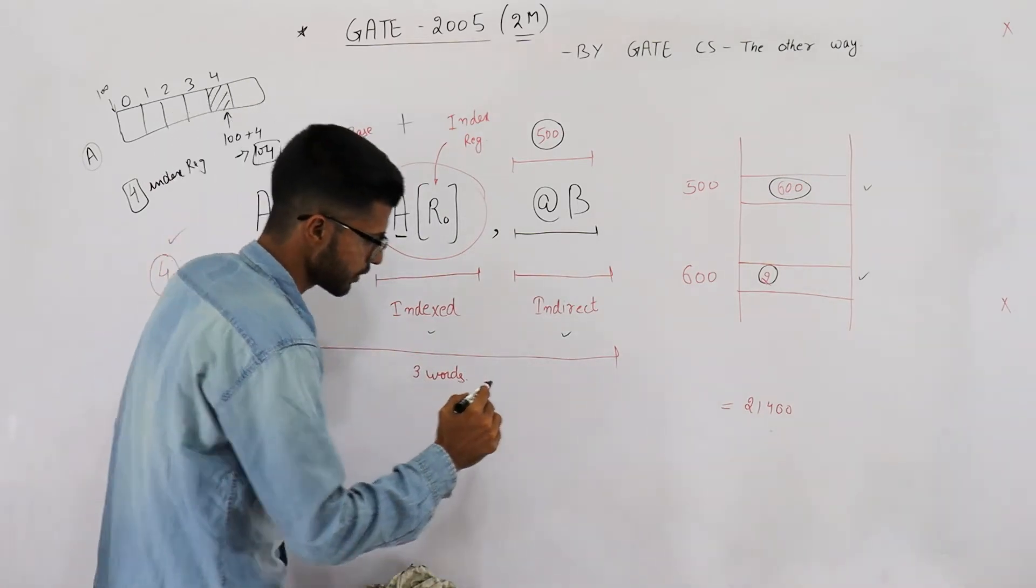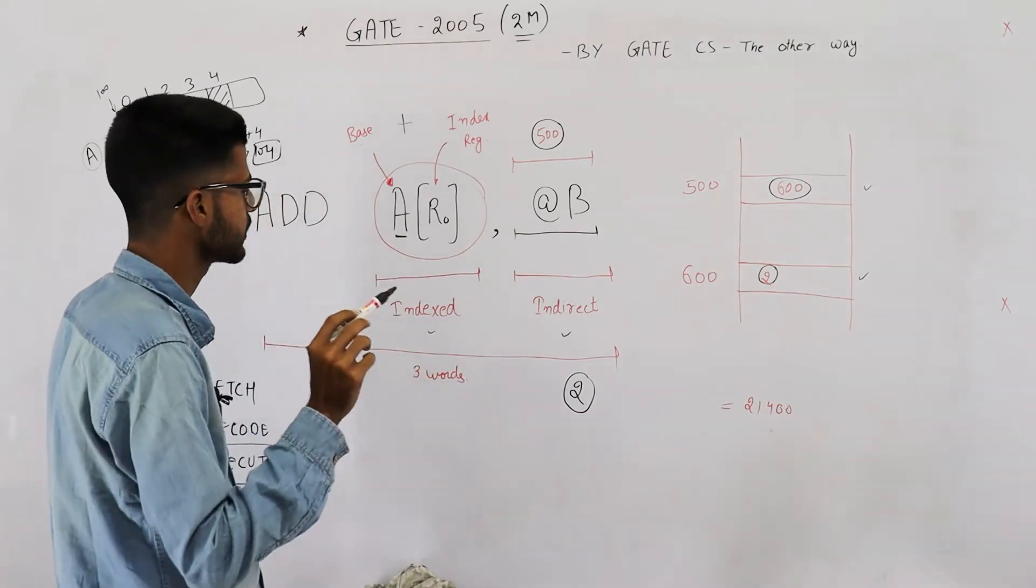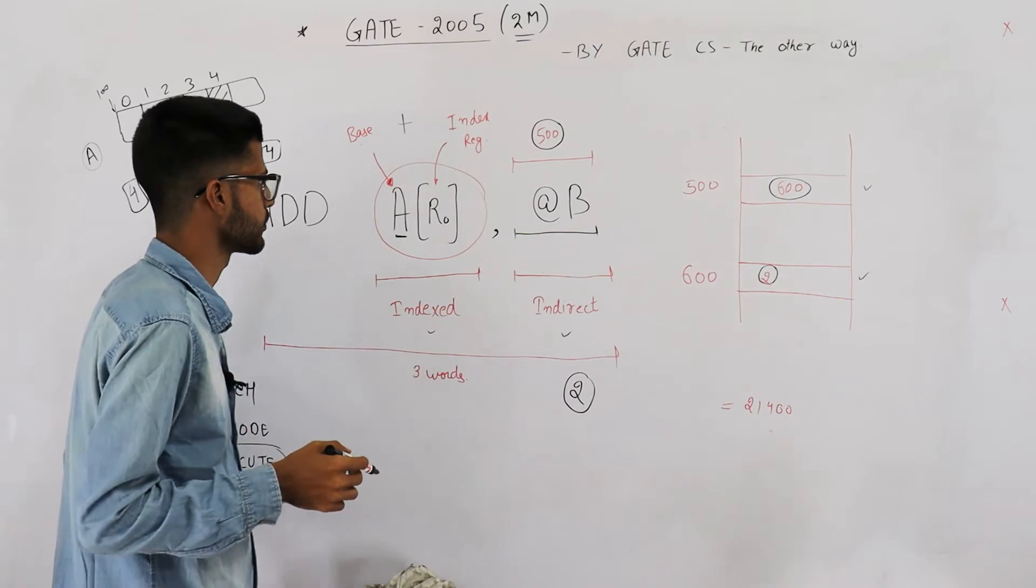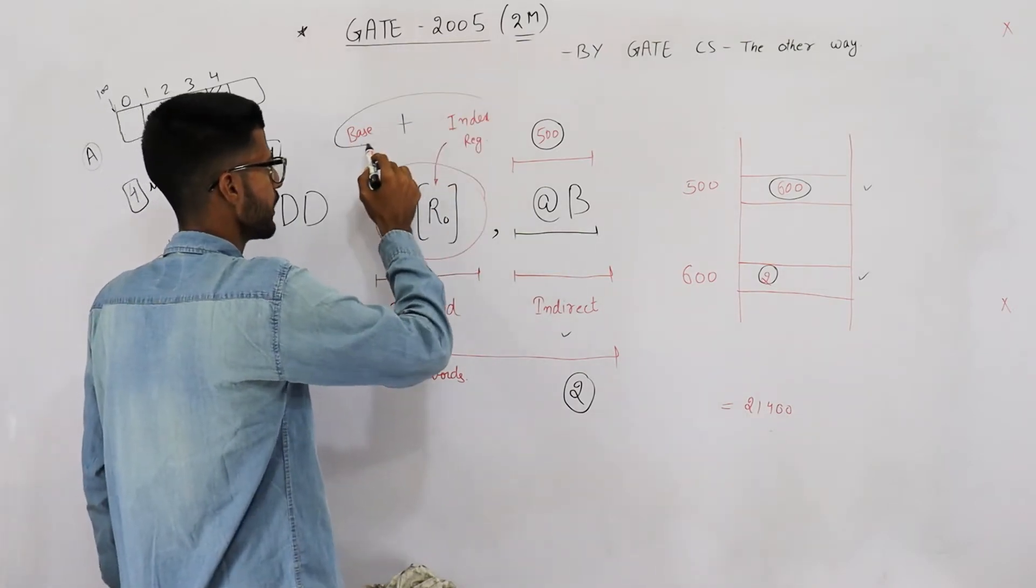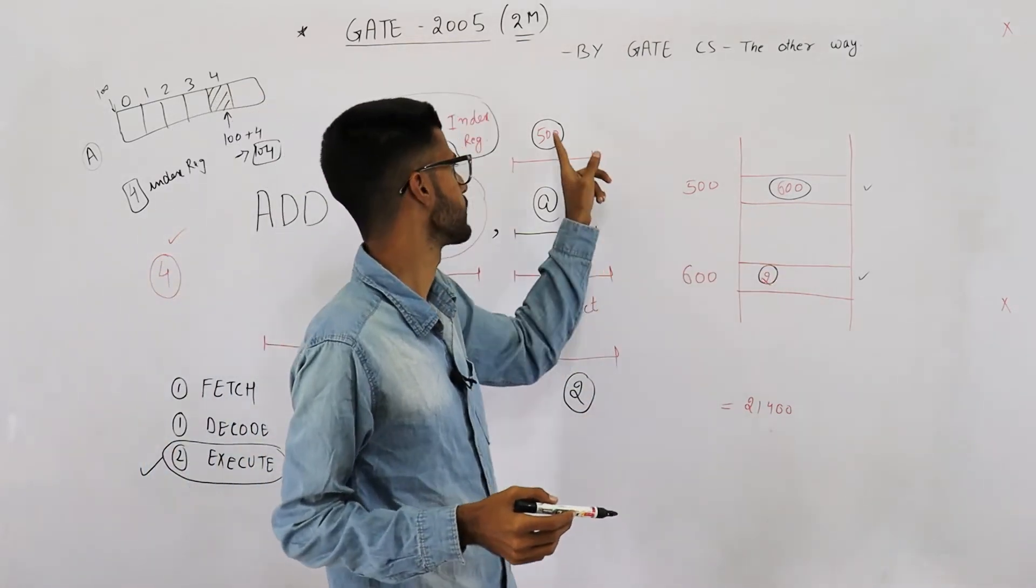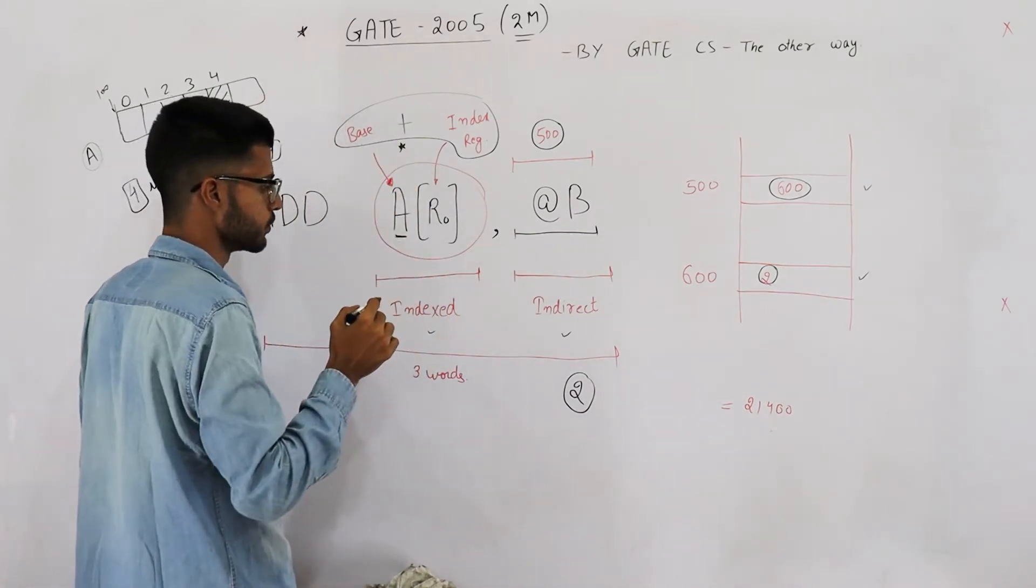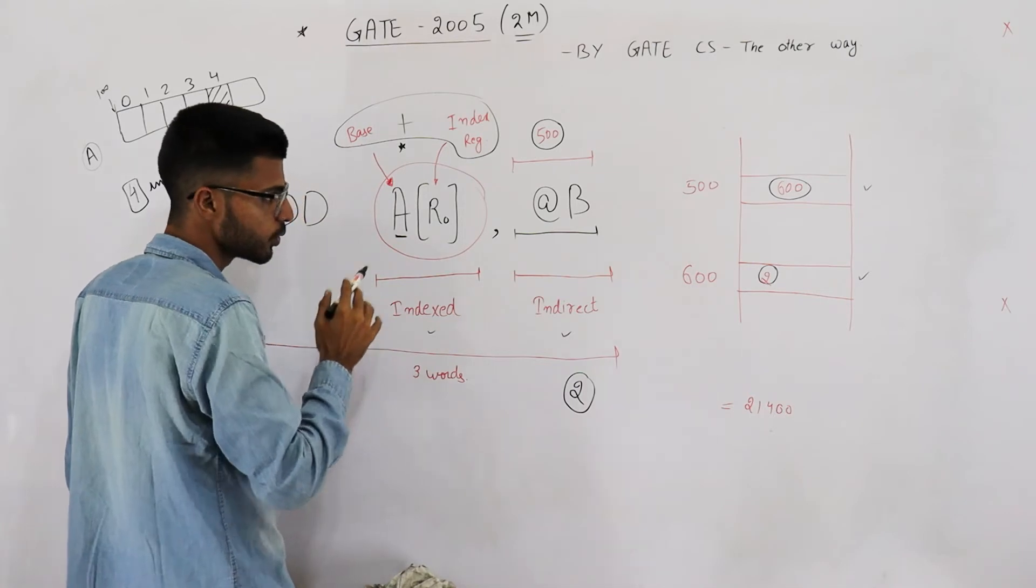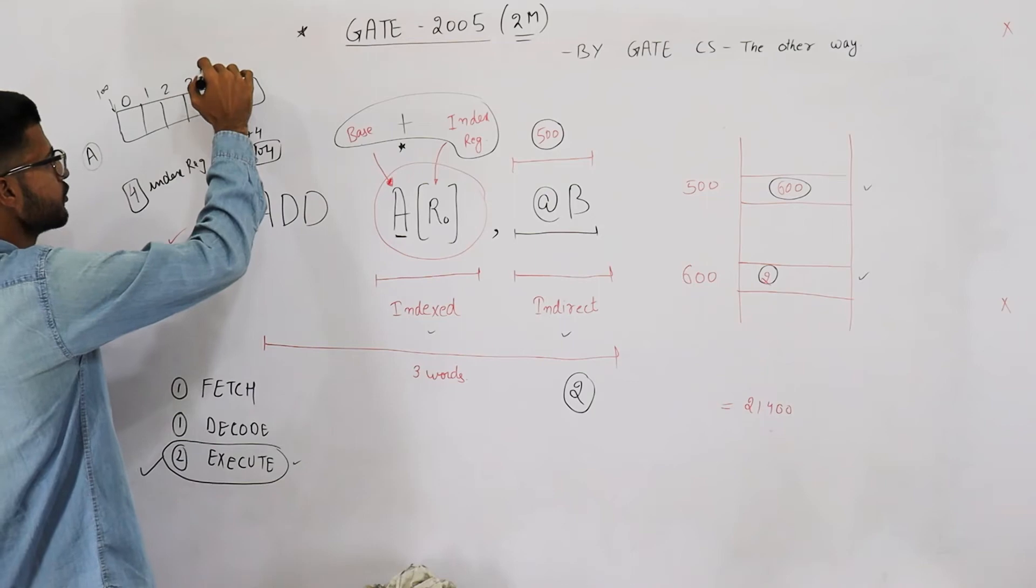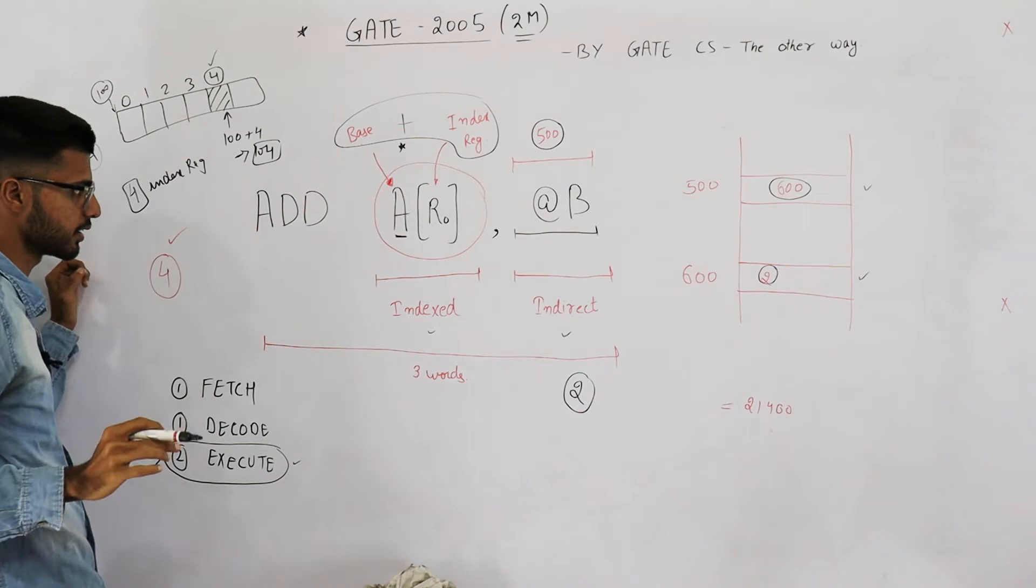Okay, so it requires two memory accesses, that is two memory reads. Then this indexed addressing mode, you already know the effective address. In this case you had to get the effective address from this address, but here effective address is already known to you. You just need to go to that memory address and fetch this element. 4 is index and 100 is base that is already known to you.